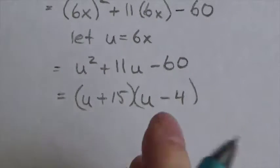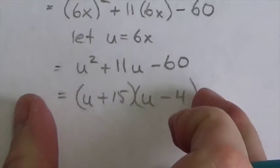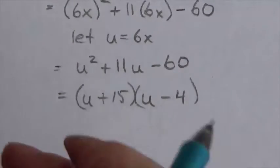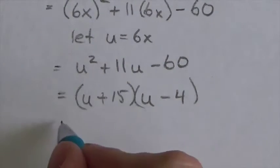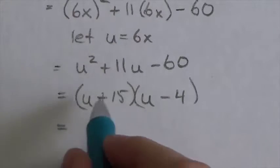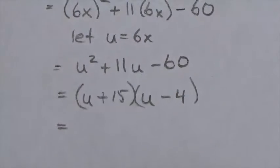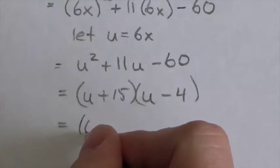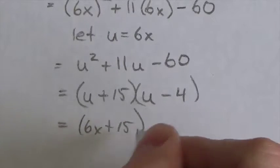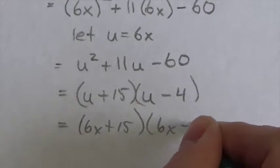Now, I'm not done factoring, but I have crossed kind of the big threshold here. Now I'm kind of on my way out of this problem. Now I'm going to go back and I'm going to plug in the 6x in there, back in for u. So this becomes 6x plus 15, 6x minus 4.